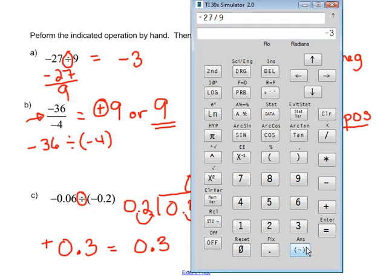Our next one, negative 36 divided by negative 4. Negative 36 divided by negative 4. We think it should be positive 9 when we press enter. Sure enough, positive 9.